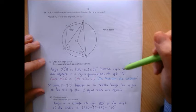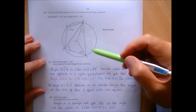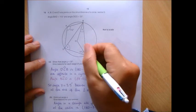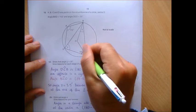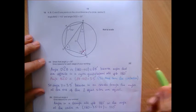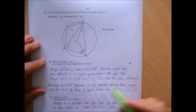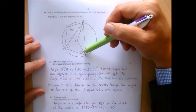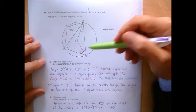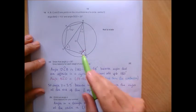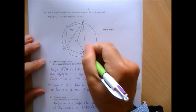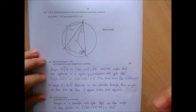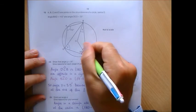To get full marks you do have to explain yourself. Angle DCB — that angle there — is 68°, because opposite angles in a cyclic quadrilateral add up to 180°. That one and that angle there are opposite and they're in a quadrilateral, so that's why this angle is 68°.